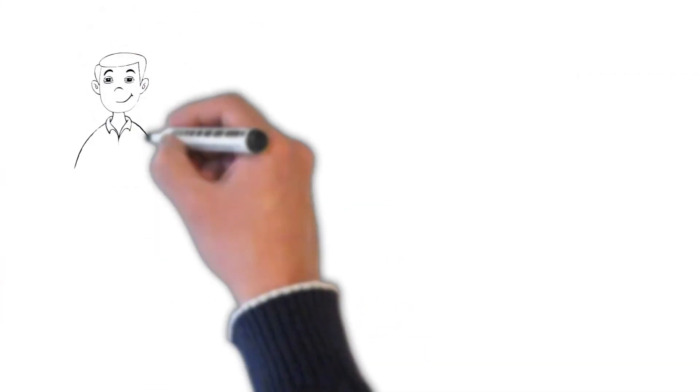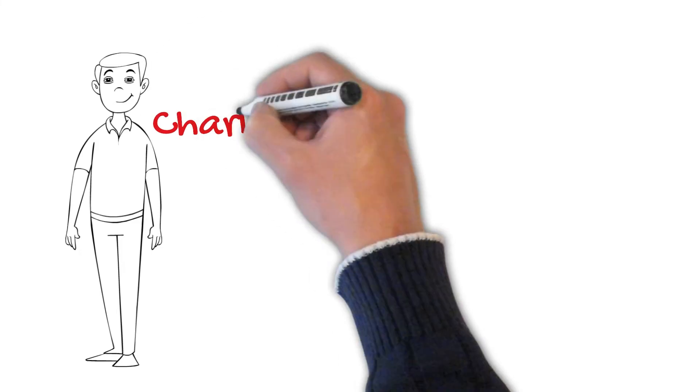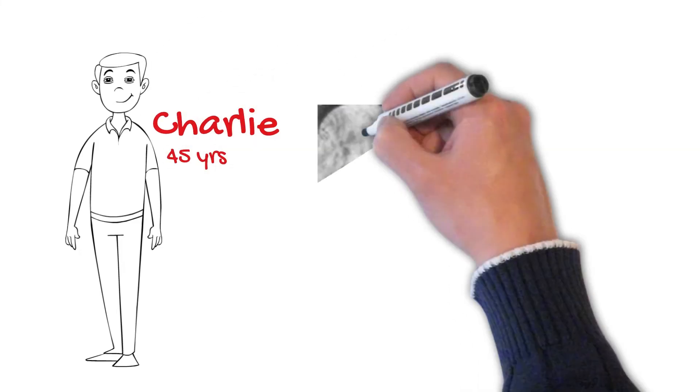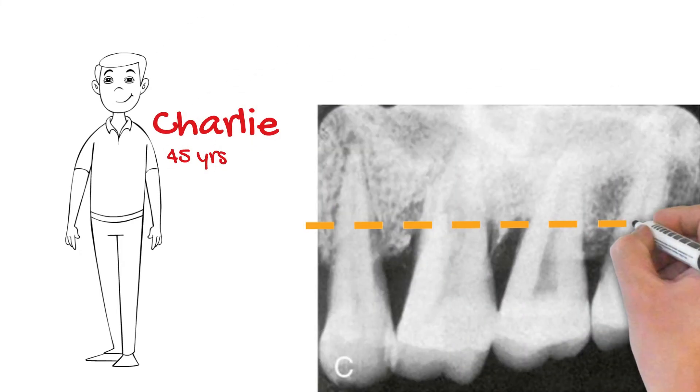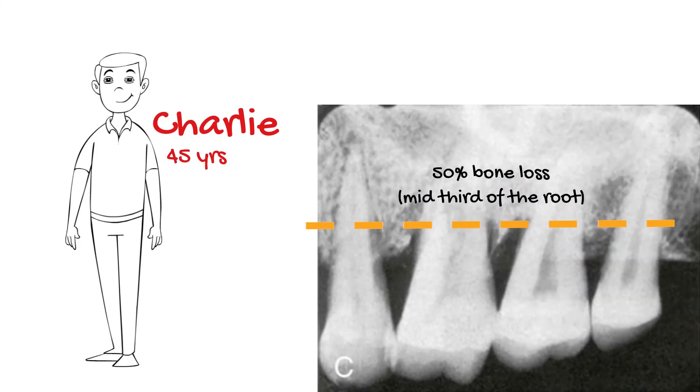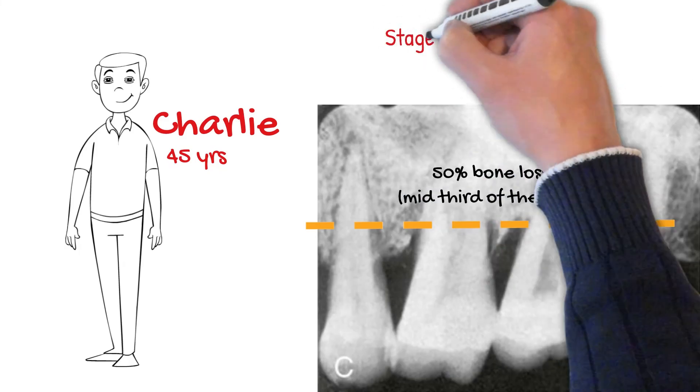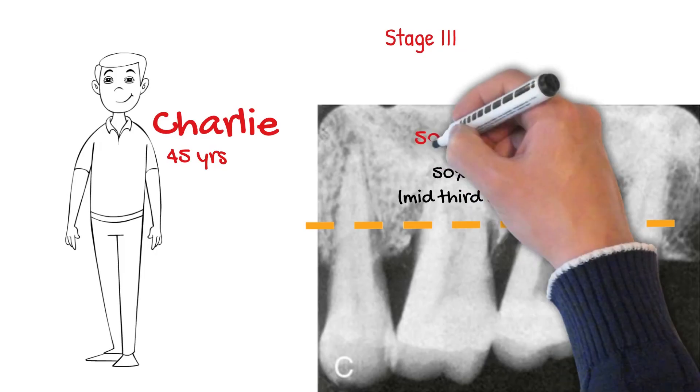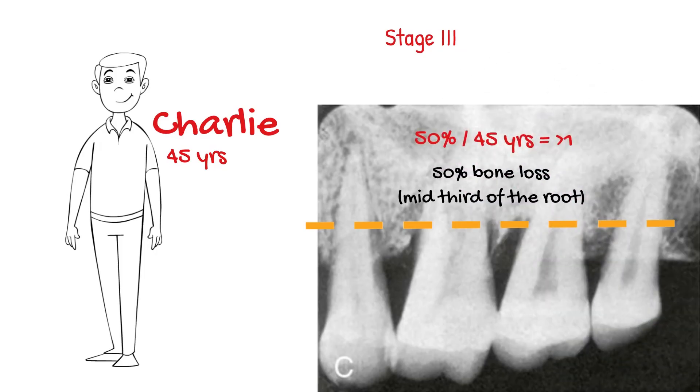Let's look at an example to see how this system can be used in clinical practice. This is Charlie, who is 45 years old. A periapical radiograph shows bone loss extending to the mid-third of the root. This puts him in the stage 3 category. If we divide his bone loss by his age, we get a ratio greater than one, which is classified as grade C.